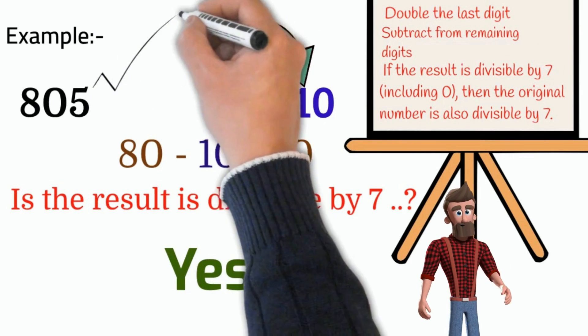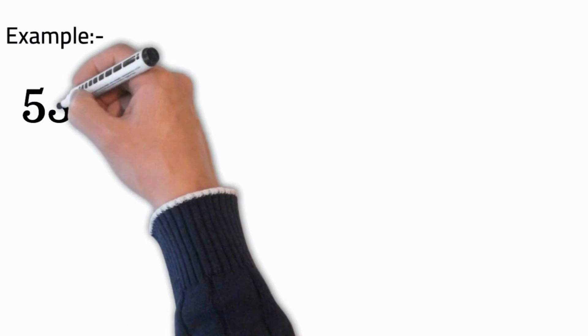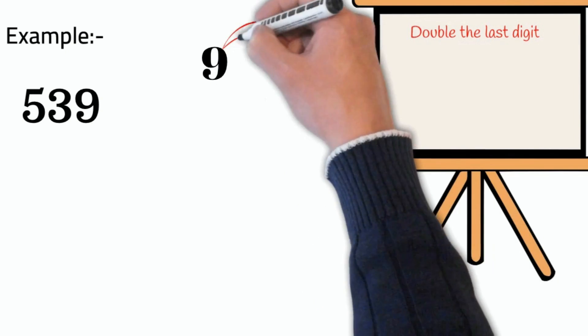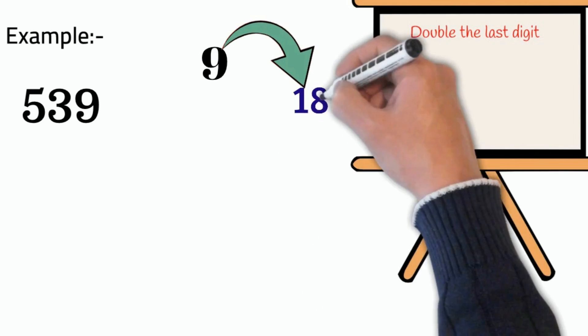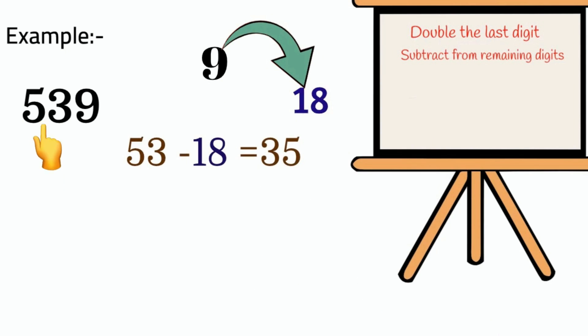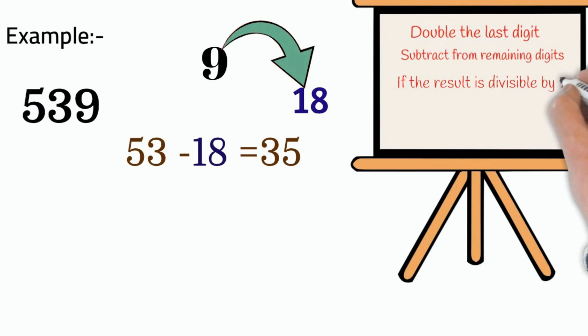Let's see a few more examples. Please remember the three steps. Note the next number, 539. Is it divisible by seven? Last digit is nine, double the digit. Nine into two, eighteen. Subtract 18 from remaining digits, 53 minus 18, result is 35.